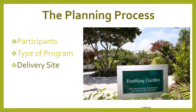Next key piece is the delivery site. Where can the program be delivered? Is it indoors or outdoors? What other factors need to be considered — like COVID protocols, hardscaping requirements like raised beds or accessible garden paths, or partnerships with a facility or social service agency which may not have appropriate onsite facilities, in which case there's a need for a delivery site such as a community garden.